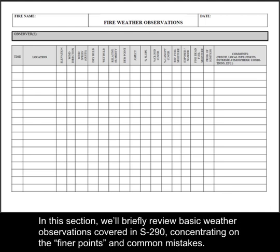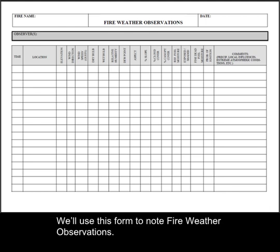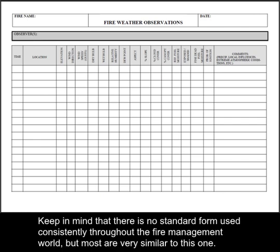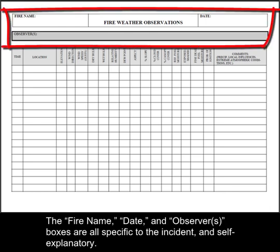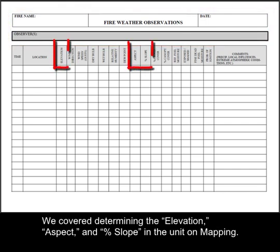In this section, we'll briefly review basic weather observations covered in S290, concentrating on the finer points and common mistakes. We'll use this form to note fire weather observations. Keep in mind that there is no standard form used consistently throughout the fire management world, but most are very similar to this one. The fire name, date, and observers boxes are all specific to the incident and self-explanatory. We covered determining the elevation, aspect, and percent slope in the unit on mapping.